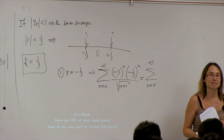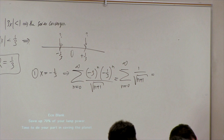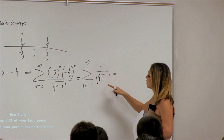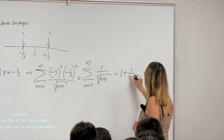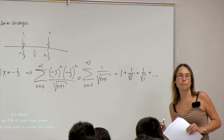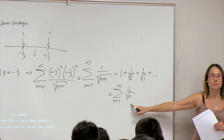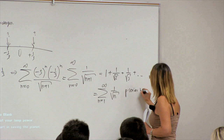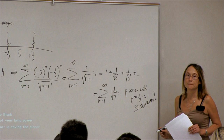This is a p-series with p = 1/2 which is less than 1, so it diverges. So the value x = −1/3 gives divergence.